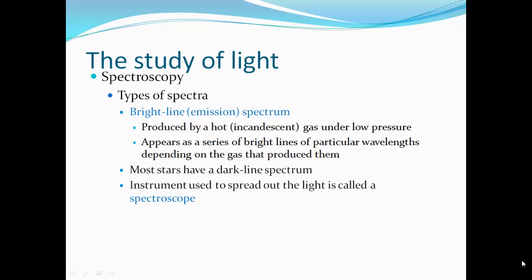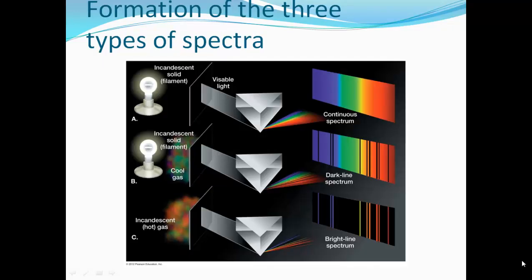An instrument used to spread out the light is called a spectroscope. Here's some examples. Here's a nice continuous spectrum. We have our light bulb passing light through a prism, which refracts and bends the light by wavelength, bending at different amounts, giving us that spread-out spectrum. If we pass that light through a cool gas, we'll have a dark-line spectrum. The dark lines represent wavelengths that are absorbed by that cool gas. In a hot incandescent gas, we'll have a reverse, a bright-line spectrum.